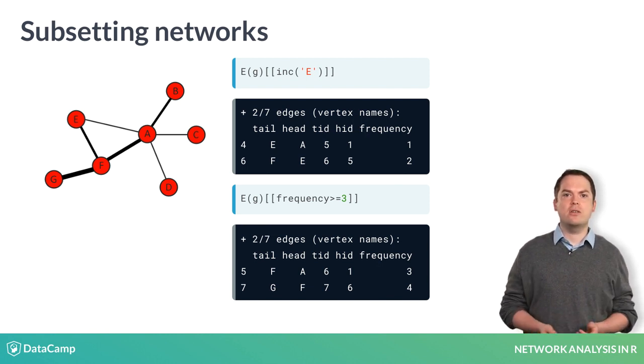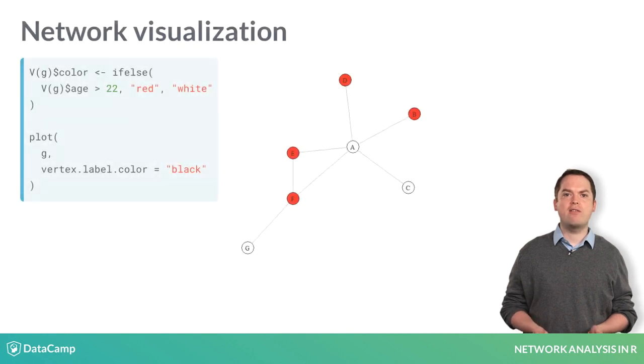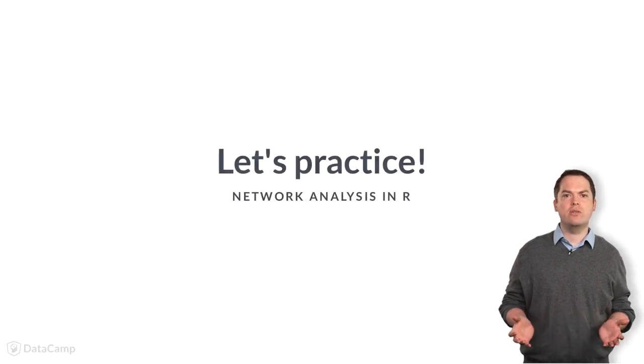Finally, in this section, you are going to further develop your iGraph network visualization skills. It is possible to adjust basic iGraph plots by adding parameters to the plot function. For instance, here we create a vertex attribute called color that iGraph will use to plot vertex colors. We will make all vertices over the age of 22 red and make the remainder white. We also specify to add black labels to each vertex using the vertex.label.color argument. Now it's your turn.